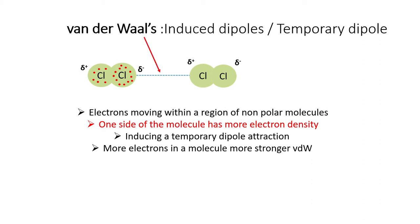Another point to remember is that these partial charges are temporary, as they could also randomly switch to the opposite direction depending on where the electron density is higher.